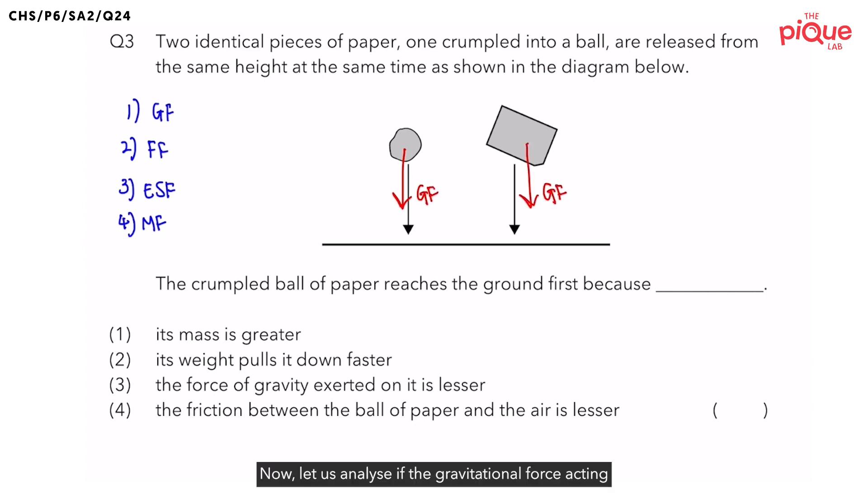Now, let us analyze if gravitational force acting on the objects is same or different. To do that, we have to analyze the factors of gravitational force. What are the factors of gravitational force? We have mass and location.